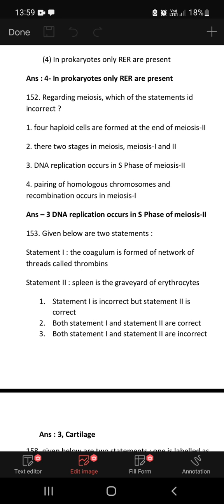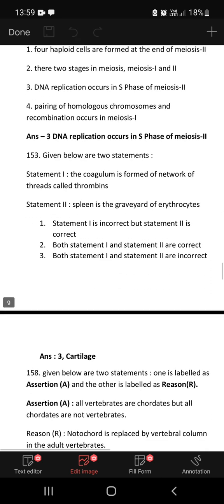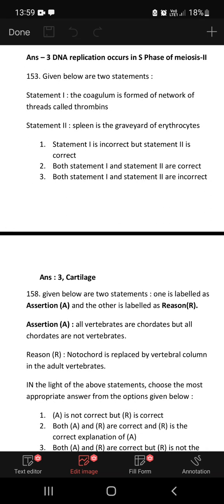Regarding meiosis, which statement is incorrect? Four haploid cells are formed at the end of meiosis 2, there are two stages in meiosis. DNA replication occurs in S phase of meiosis 2. This is the incorrect statement because DNA replication occurs before meiosis 1 in the cell cycle.